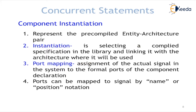Component instantiation represents a pre-compiled entity-architecture pair. A component is already a pre-compiled program that has been executed, simulated, synthesized, and kept in the same directory, so we can repeatedly use the component. Instantiation is selecting a compiled specification from the library and linking it with the architecture where it will be used. Port mapping is the assignment of actual signals in the system to the formal ports of the component declaration — connecting the component's ports to the external signals where we want to use the component's functionality. Ports can be mapped by name as well as by position.